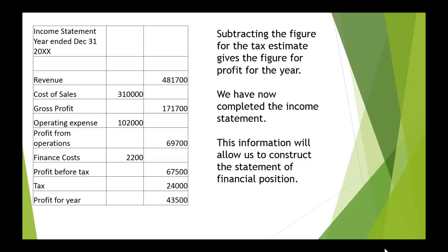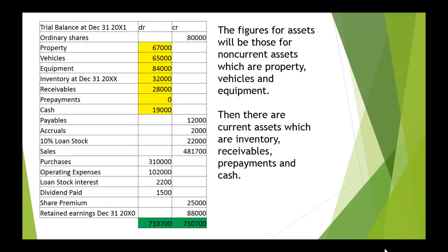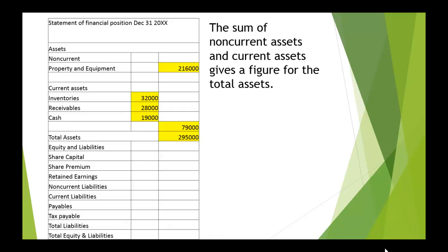With that information, we can now start to construct the statement of financial position for this PLC. In the equity and liabilities section, this is where we're going to have the accounts for share capital, share premium, and retained earnings. We'll start by looking at the figures for assets — property, vehicles, and equipment are the non-current assets; inventory, receivables, prepayments, and cash are the current assets. Adding together the non-current assets gives us 216,000. The current assets — inventories, receivables, and cash — come to 79,000. Adding those together: 216,000 plus 79,000 is 295,000.